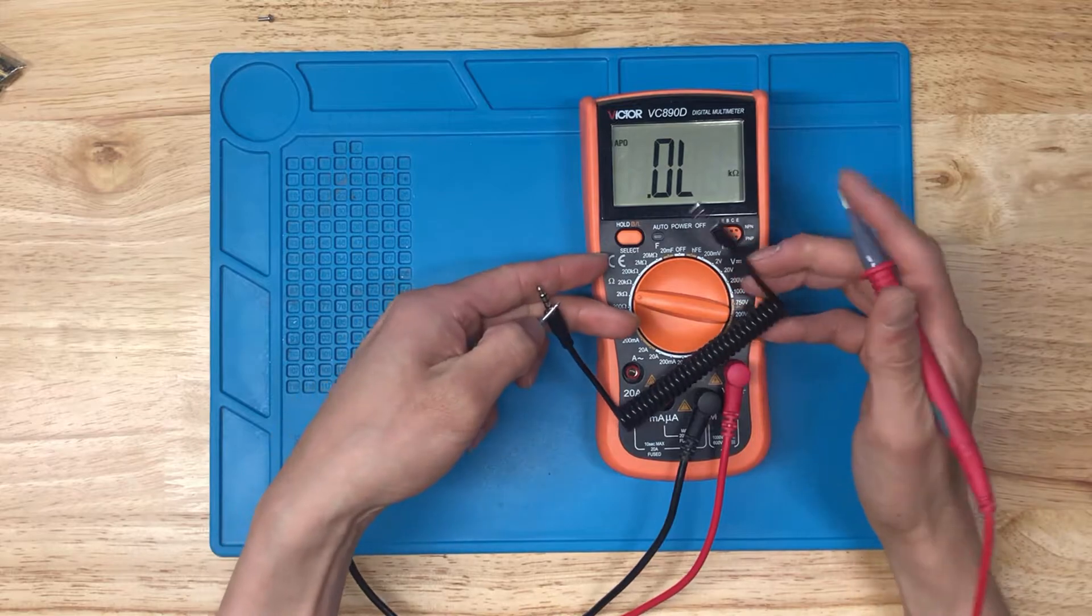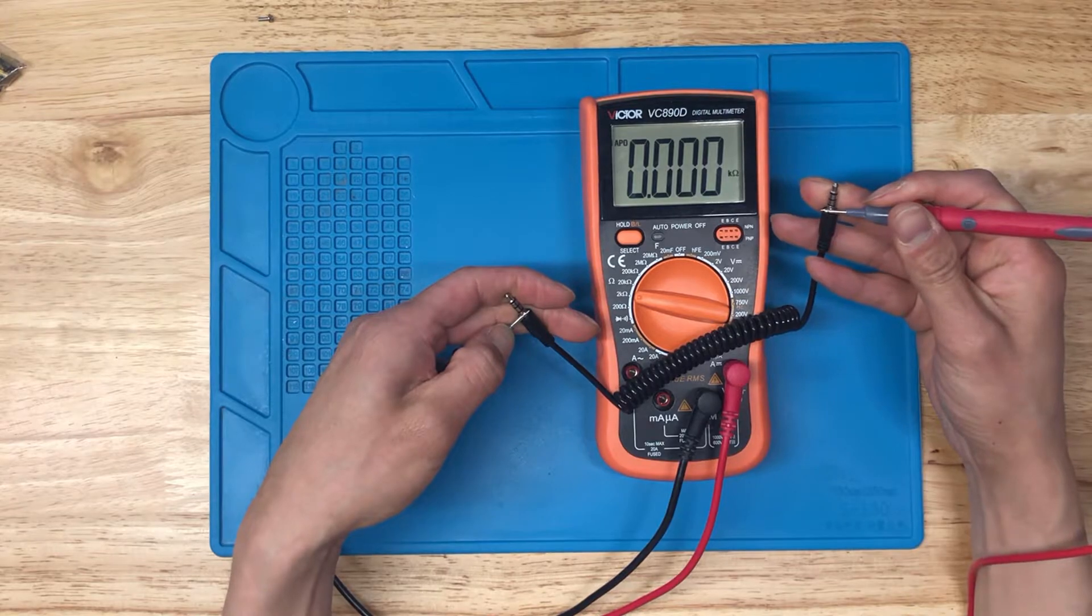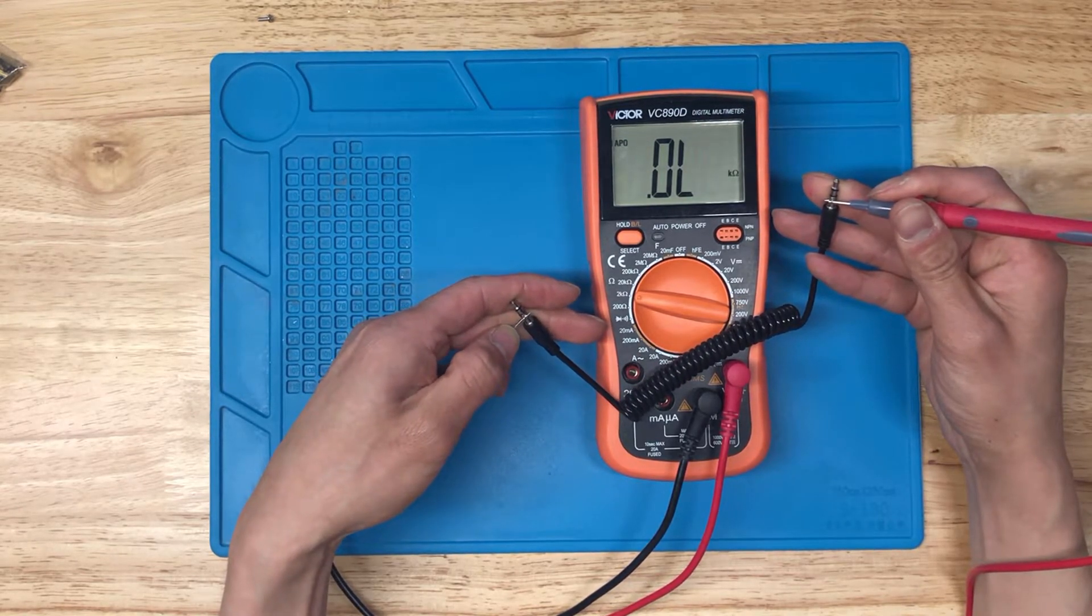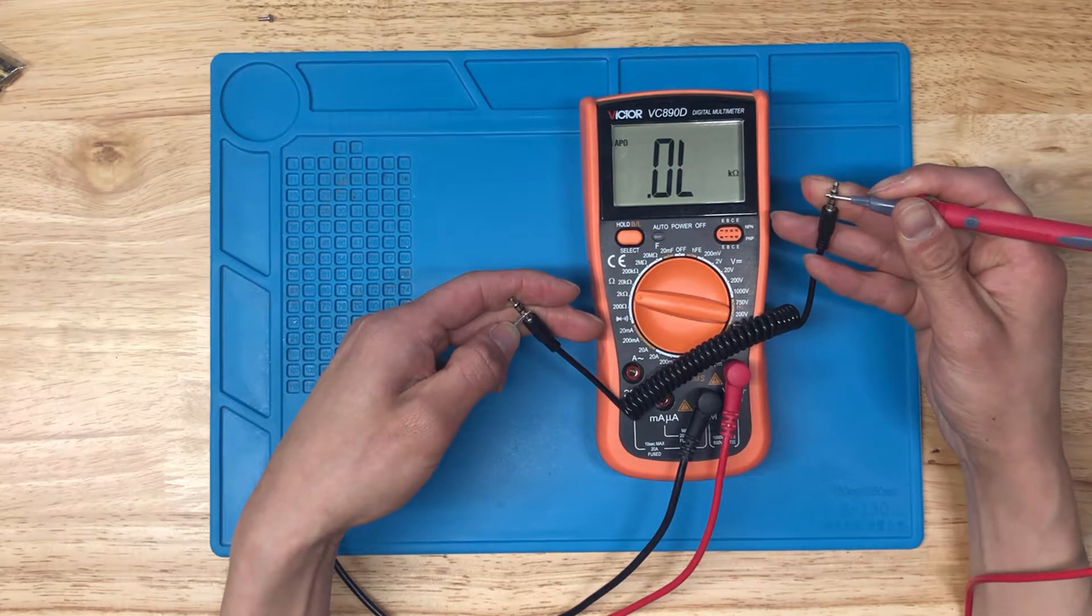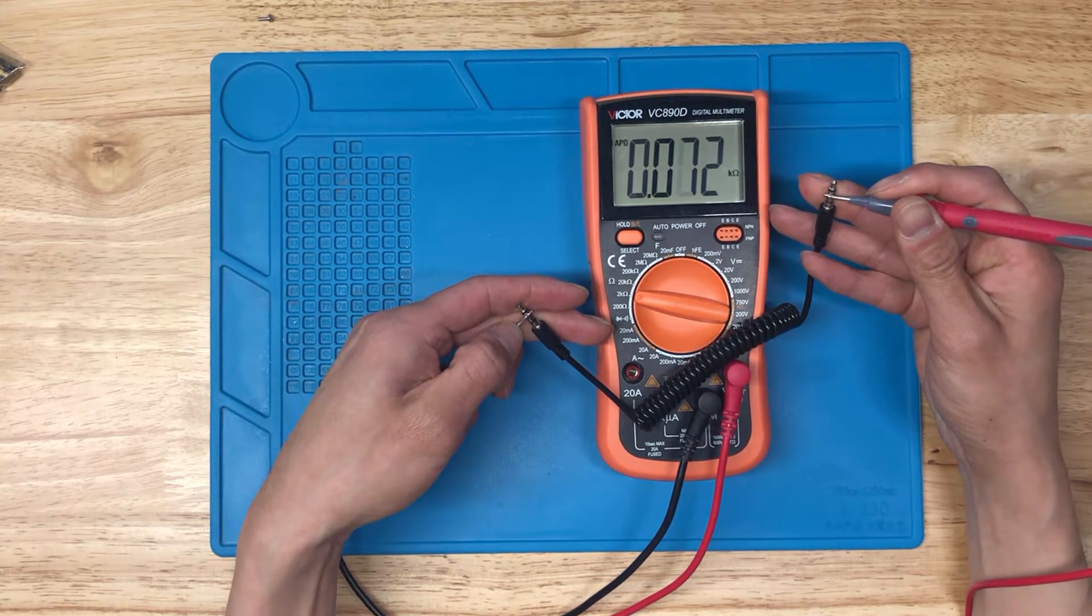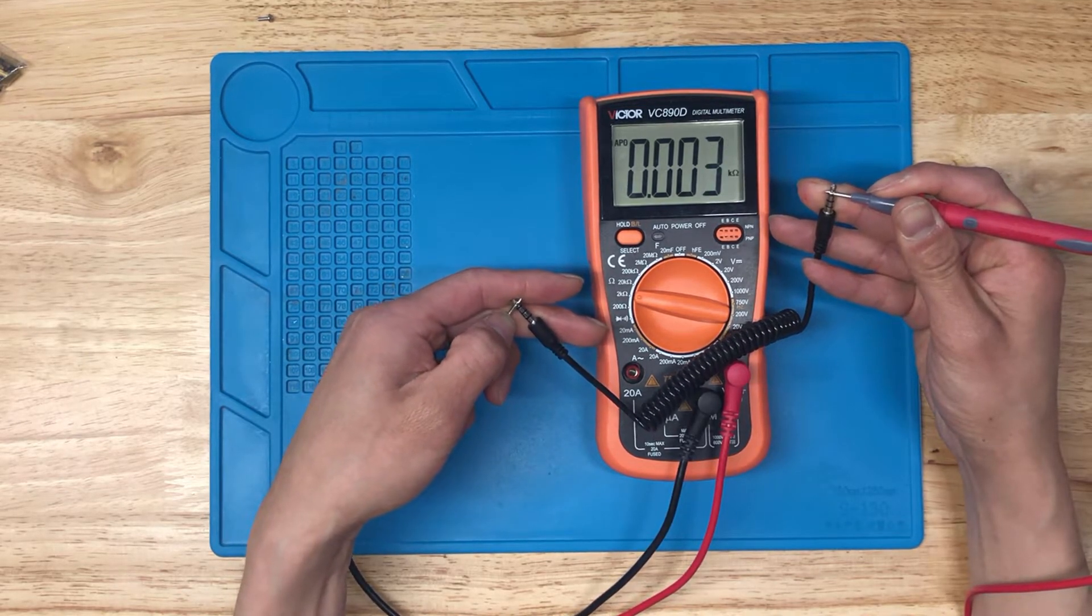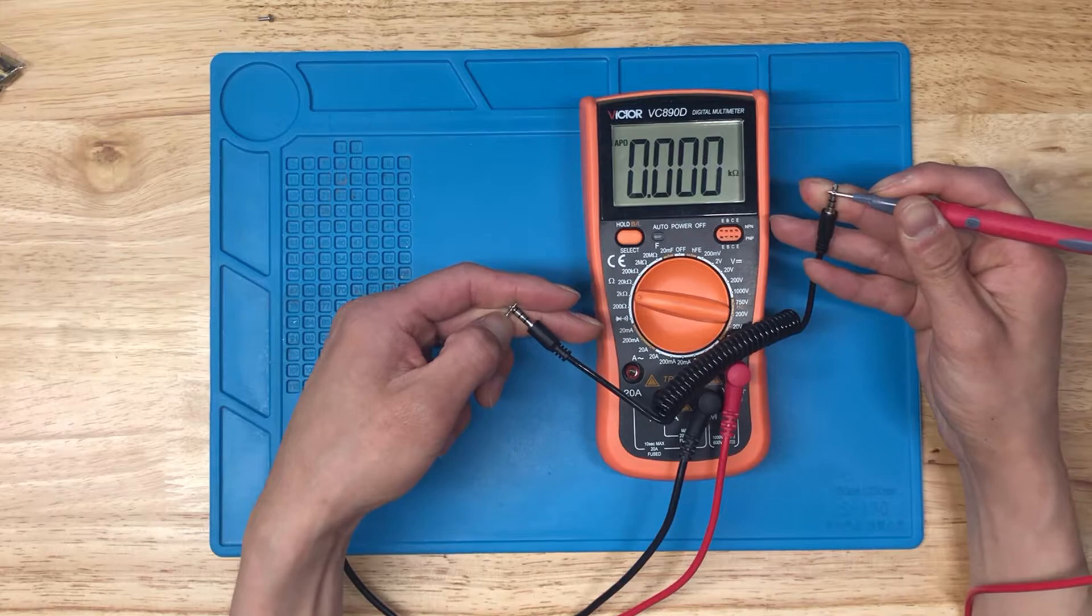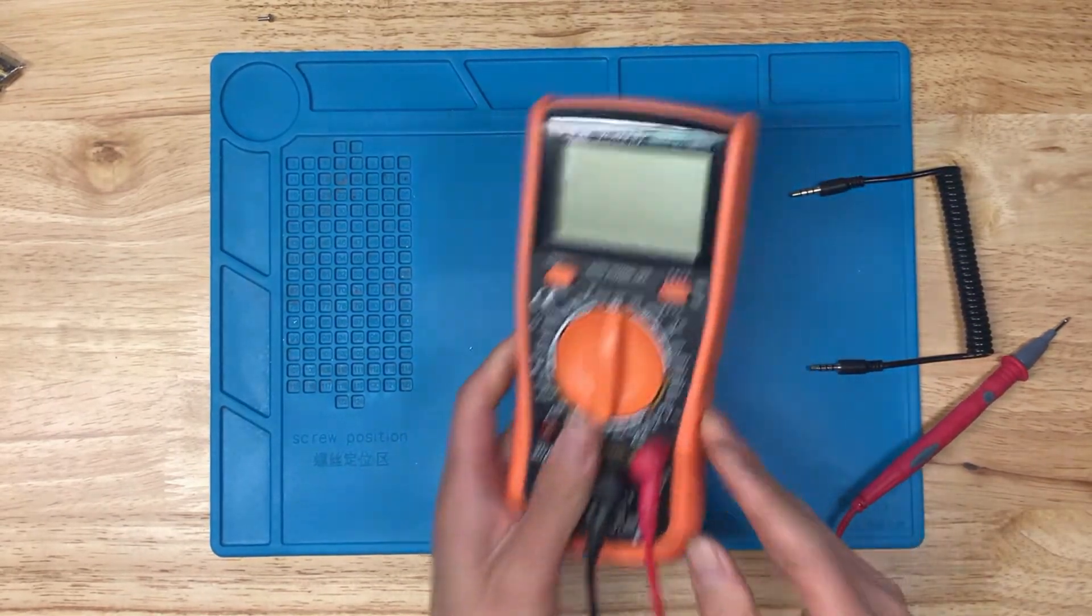And then we'll measure this cable again. So sleeve to sleeve, reads at almost zero. And checking these two rings together, that works out. Checking the other pair of rings, checks out. And then checking the tips. So zero resistance across everything. So I'll put this multimeter away.